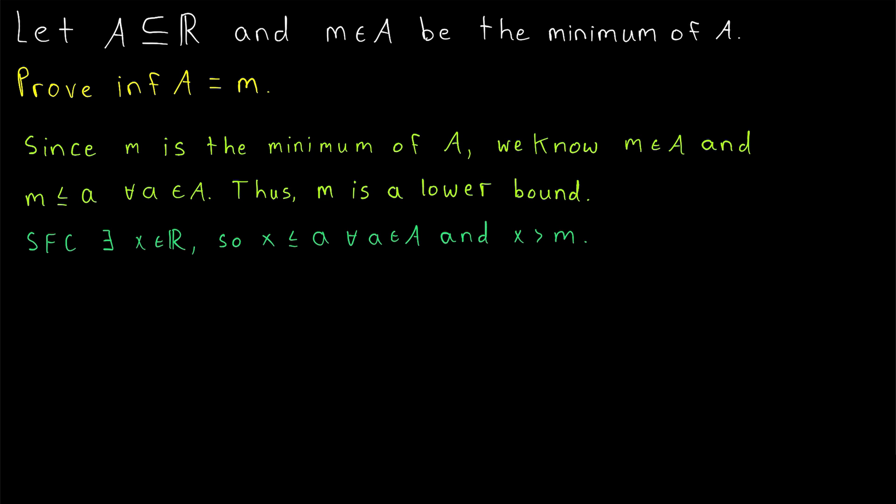This almost immediately gives us a contradiction, because here we have X is greater than M. However, in assuming that X was a lower bound, we assumed that X was less than or equal to every element of A, and M is an element of A. So that means X is less than or equal to M. And there we go. We have that X is less than or equal to M, and X is greater than M. That's a contradiction.